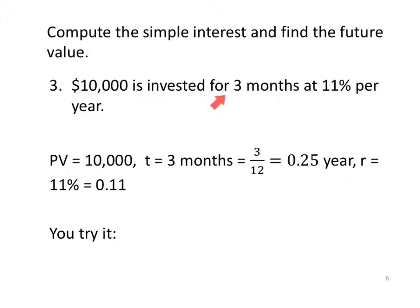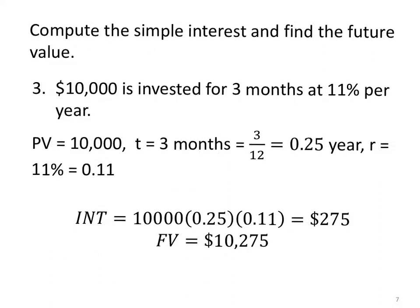If $10,000 is invested for three months at 11% per year, we'll have a present value of $10,000. Three months is 3 twelfths or a quarter of a year. And my R value is 11%, also known as .11. Give it a shot. See how you do. Alright, did you put the interest is $10,000 times .25 times .11. 11% is .11. When you multiply this all together, you get $275 for a total future value of the $10,000 initial investment, plus the $275 interest, $10,275.